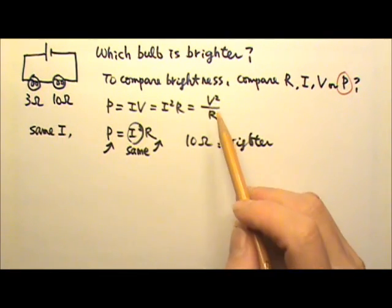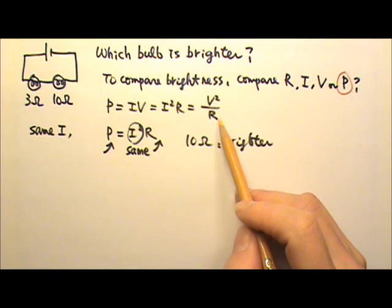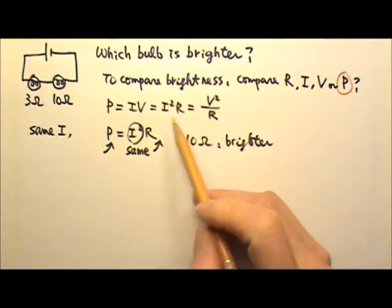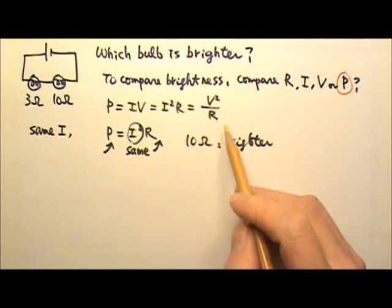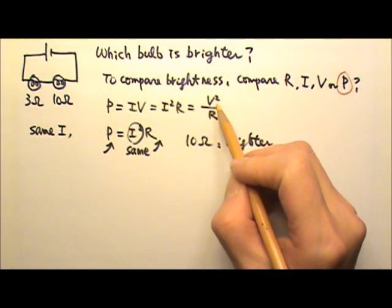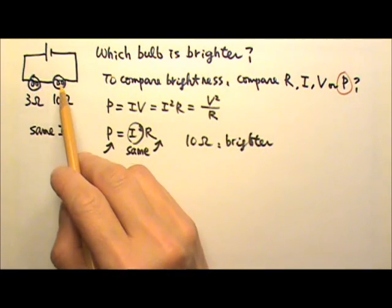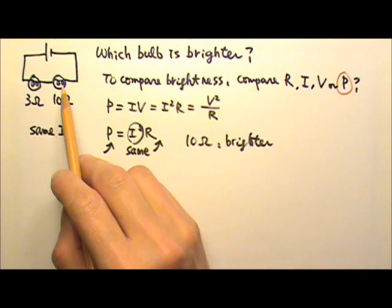Of course, one may wonder why not use this equation. If we use this equation, that means the one with the larger resistance would consume less power. But that won't work because we cannot leave the V squared out because those two bulbs, they are in series, they do not have the same voltage.